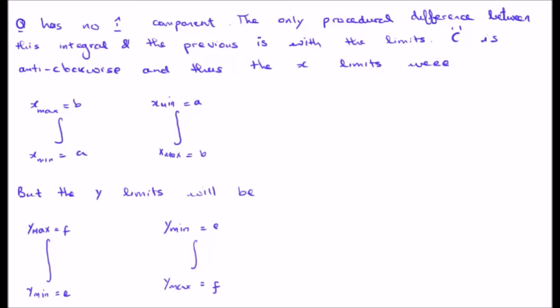We saw that in order to have the limits the same, we negated one of these and put b up top and a down below, and we were able to amalgamate the integrals.